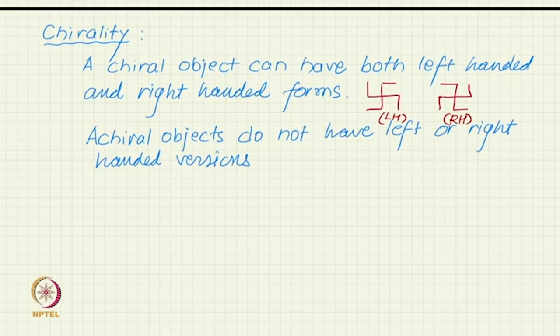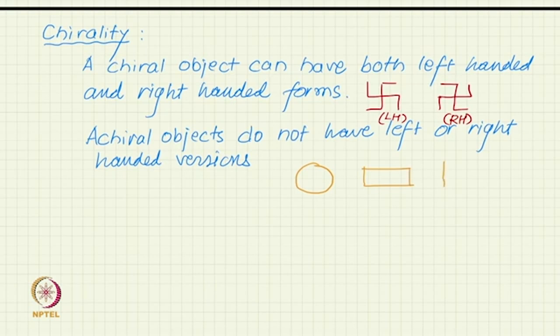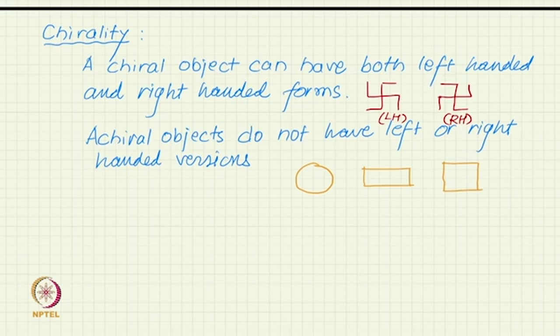In this 2D example, you cannot by rotation superimpose one swastika on the other. But a circle has no such problem — there is no left-handed or right-handed version of a circle in 2D. A rectangle or square does not have this problem either. So why does the swastika have this property of existing in two versions, but a square or rectangle does not? A square has 4-fold symmetry and a rectangle has 2-fold symmetry, yet neither distinction is the key factor.